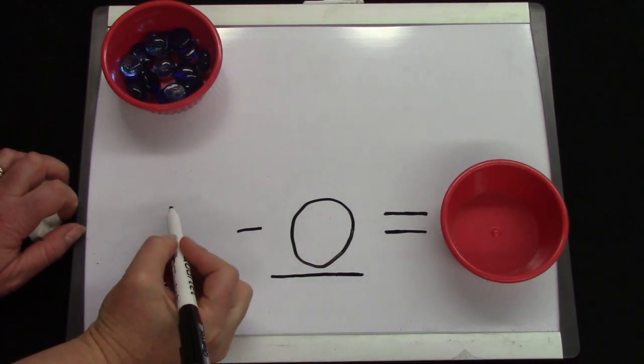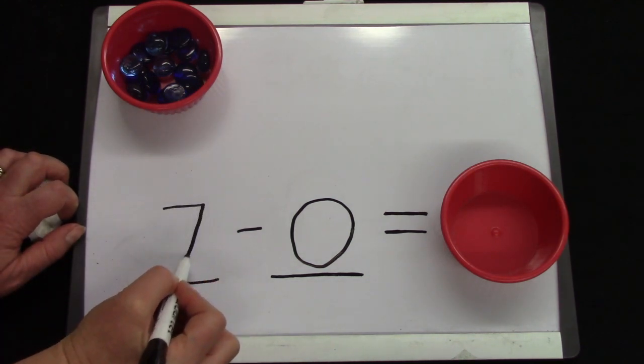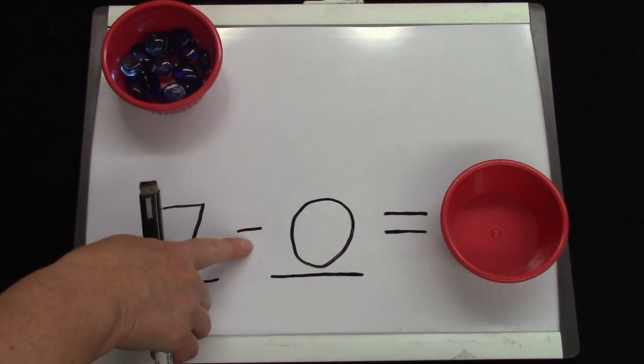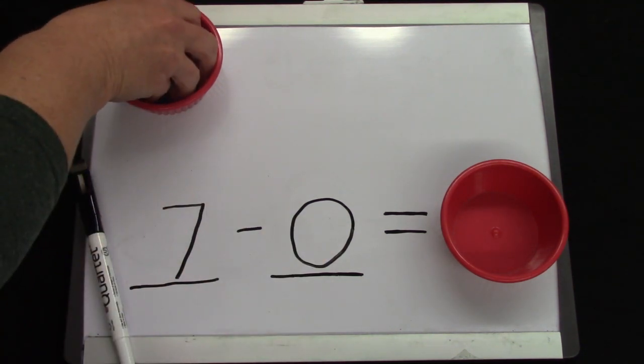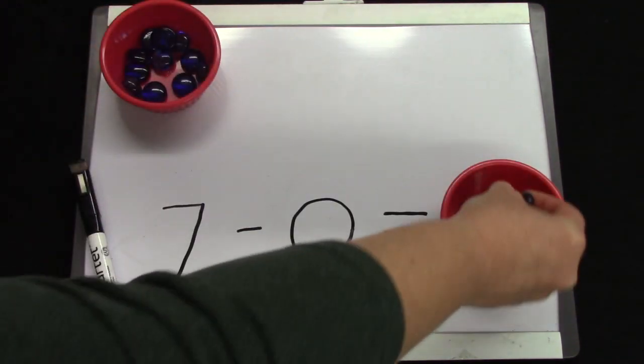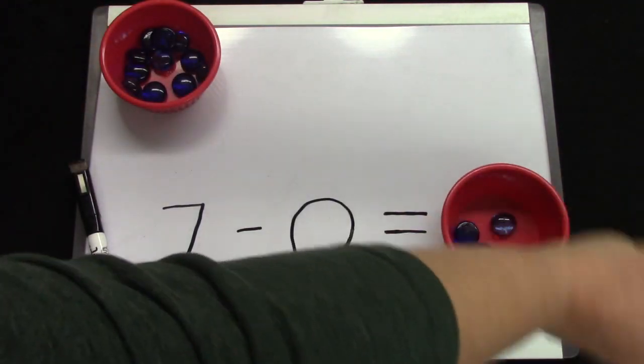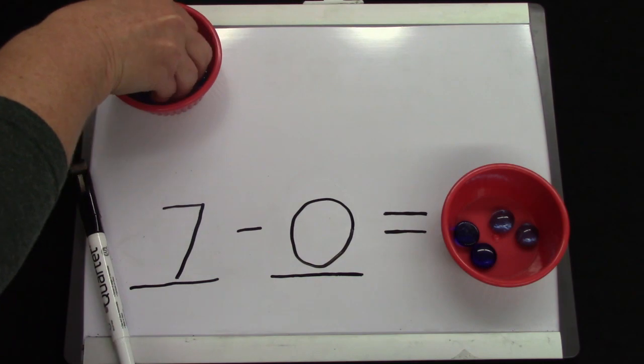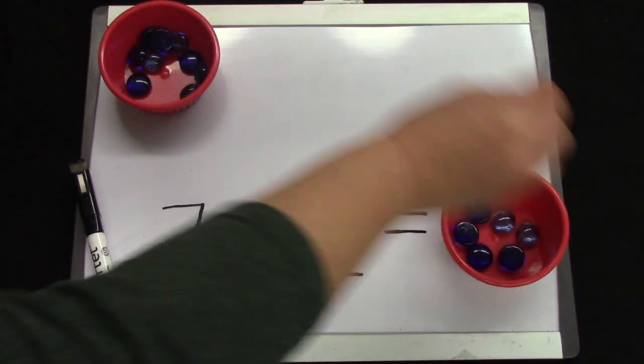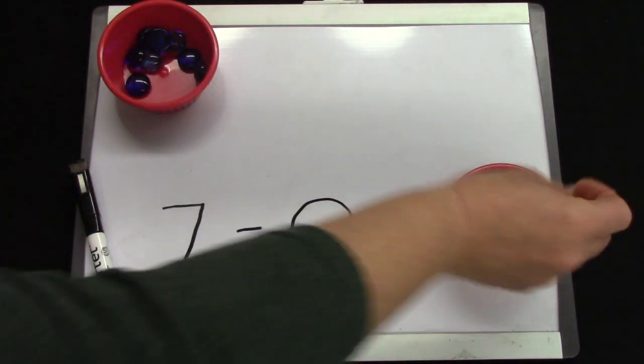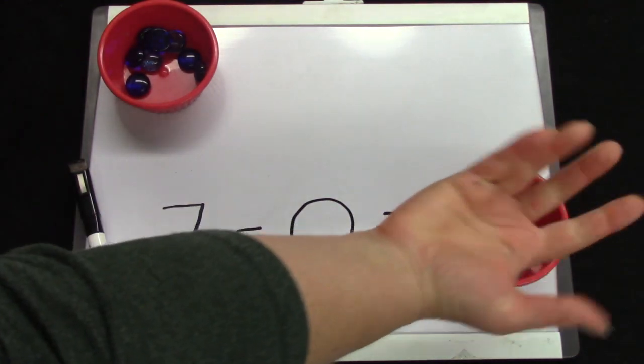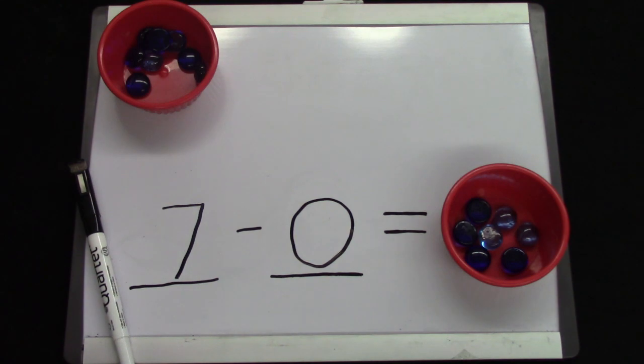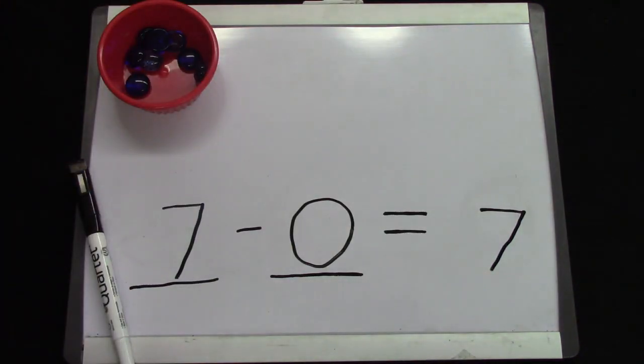On this number line, I'm going to write down the number seven. Seven take away or minus zero. Seven take away zero. Well, let's get seven gems. One, two, three, four, five, six, and one more for seven. Seven take away zero. How am I going to take away? None. Seven take away zero is seven.